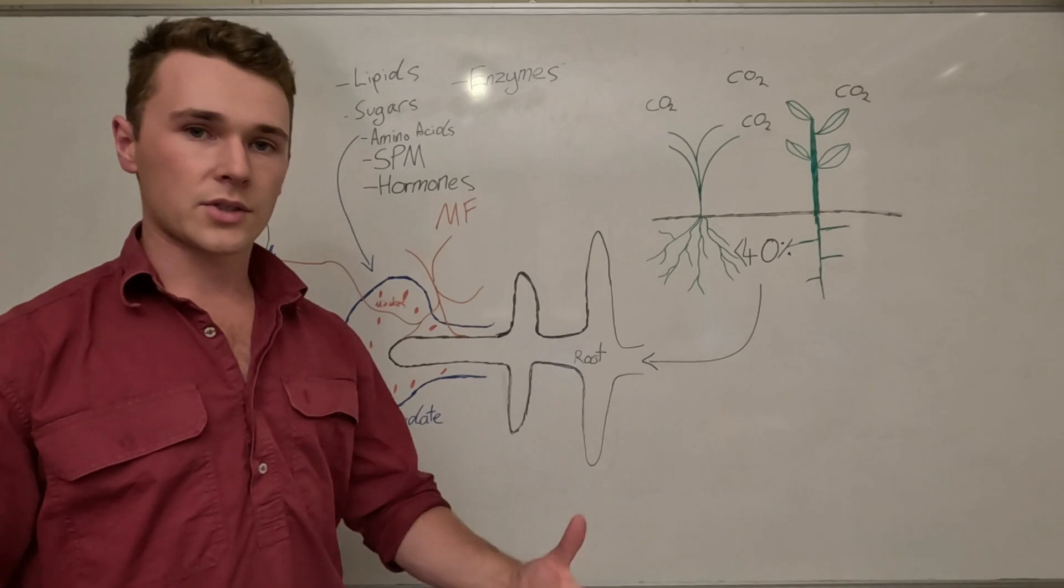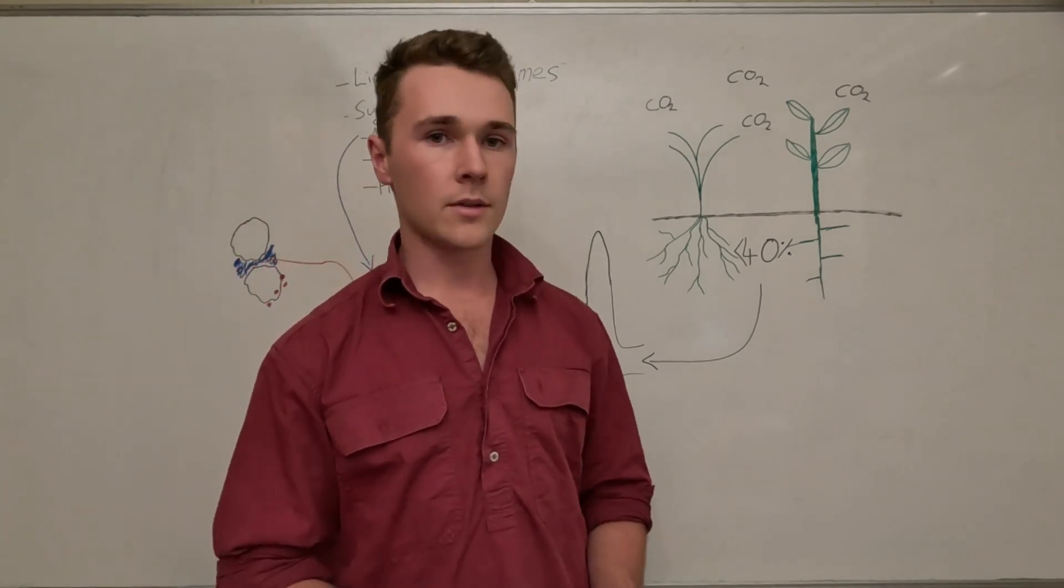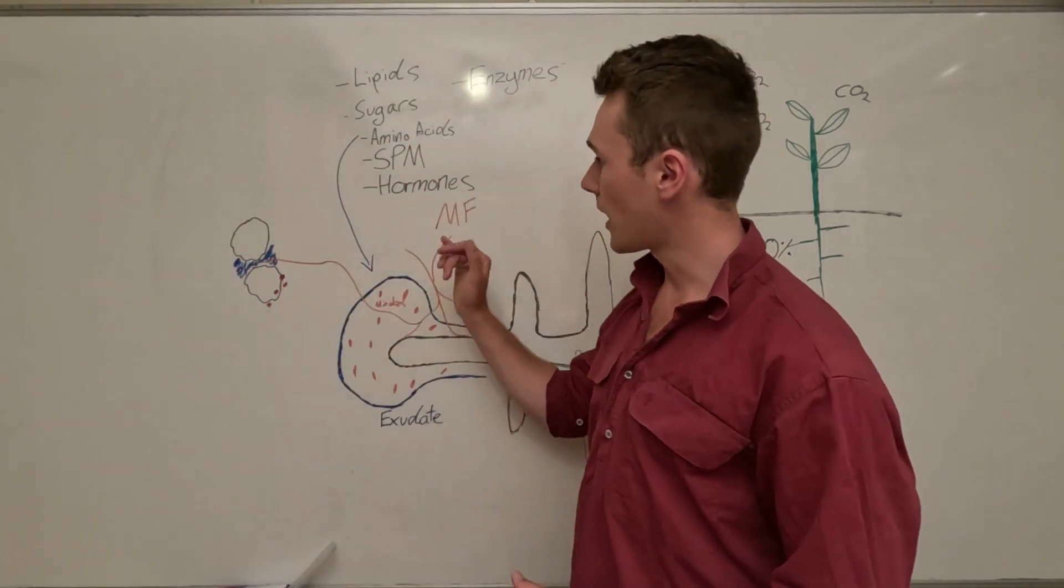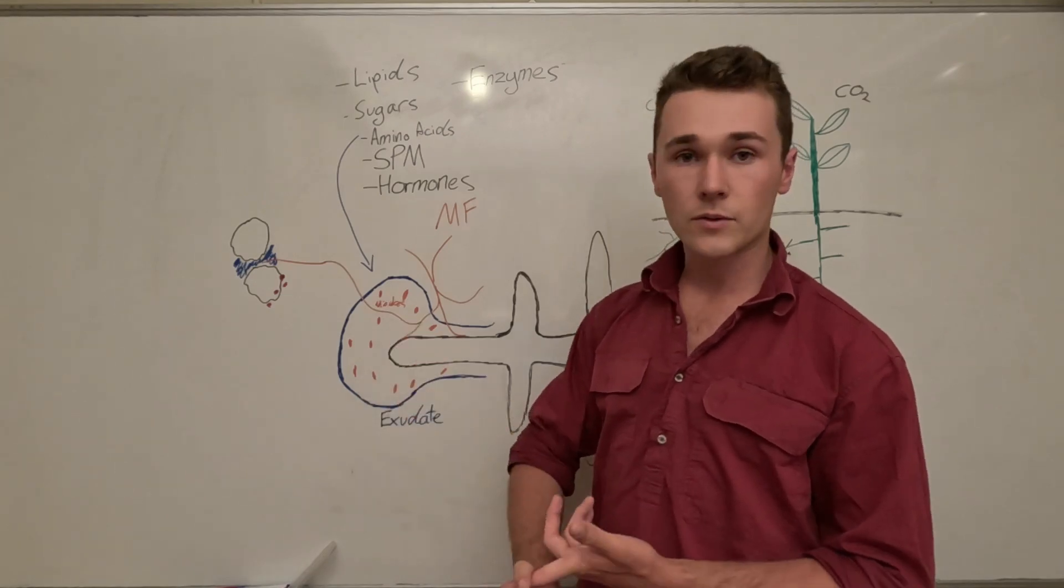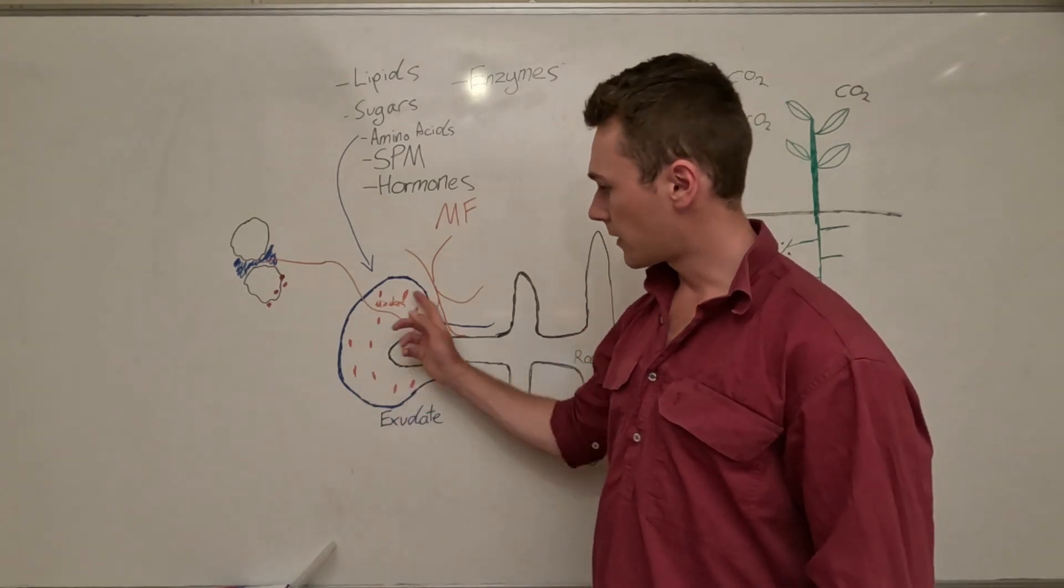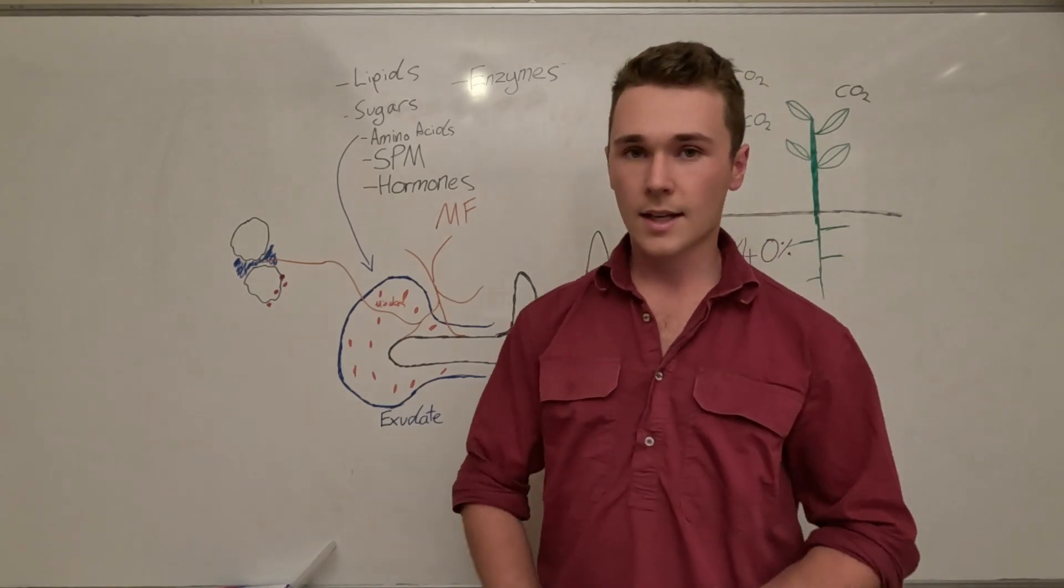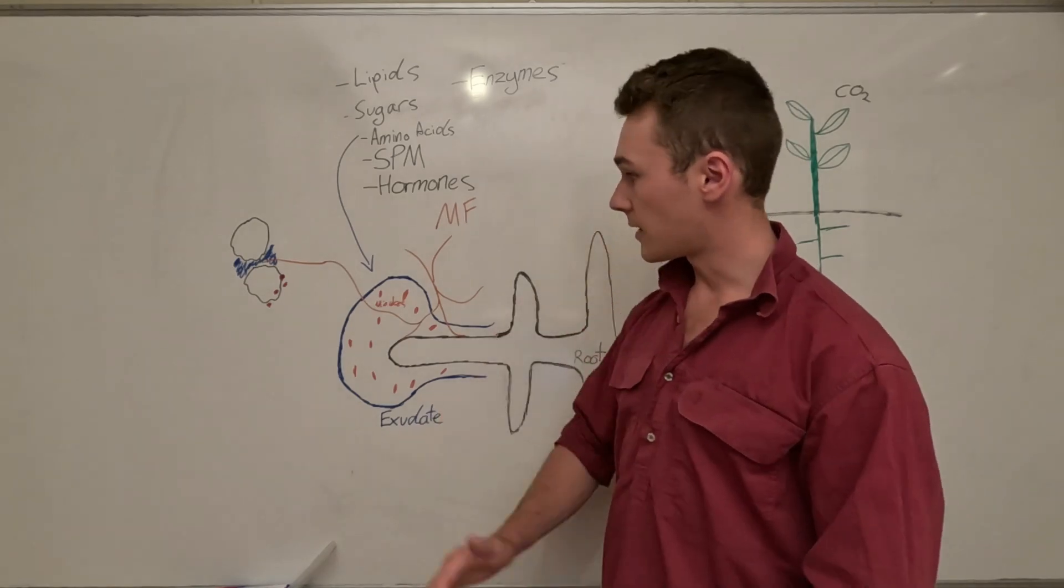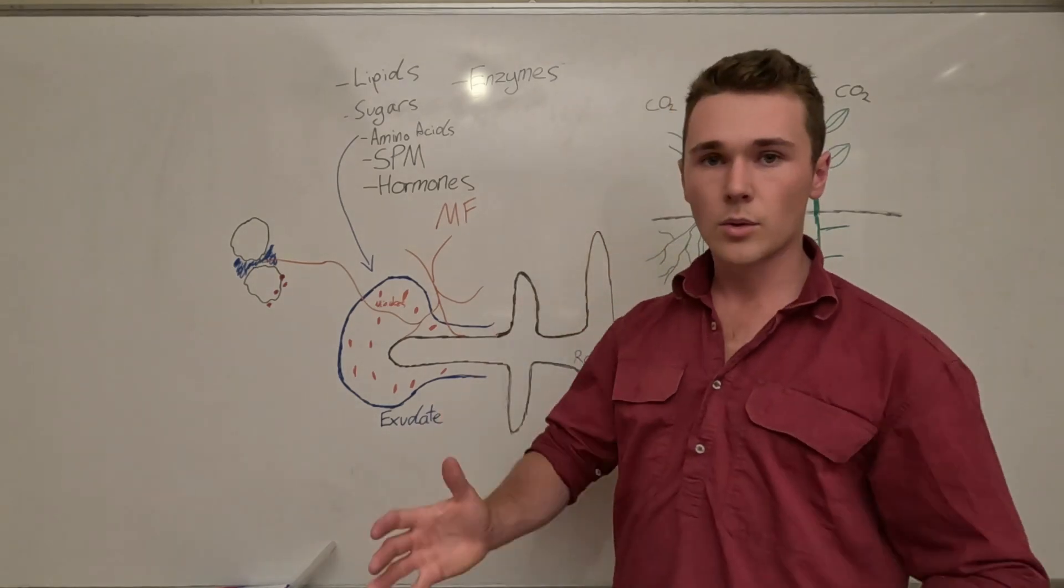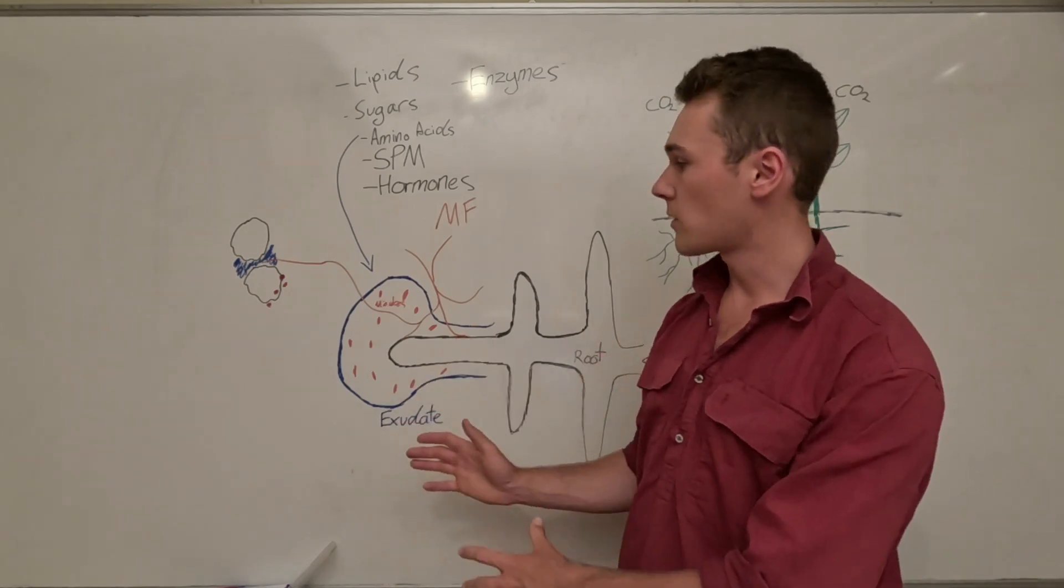If you watched our types of soil organic carbon video, you'll notice that root exudates is one of our dissolved soil organic carbons. Effectively this is our biggest source of dissolved soil organic carbon and it's these exudates.